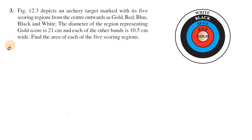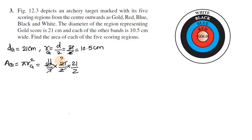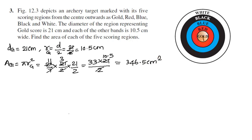The diameter of gold is 21 cm, so the radius is 10.5 cm. Area of gold region = π r² = 22/7 × 10.5 × 10.5 = 346.5 cm². This is the gold region area.